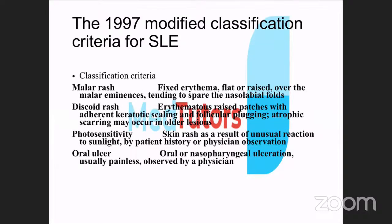The 1997 ACR criteria for SLE classification — the older criteria we previously used in medical school — include 11 criteria: malar rash, discoid rash, photosensitivity, oral ulcers, and others. Currently the 2018 criteria are used.